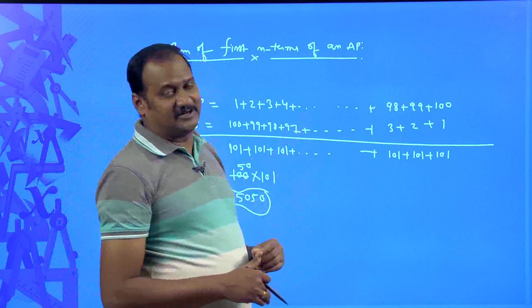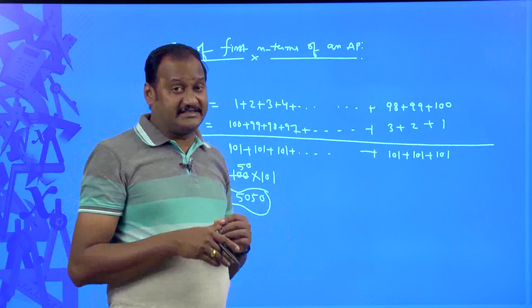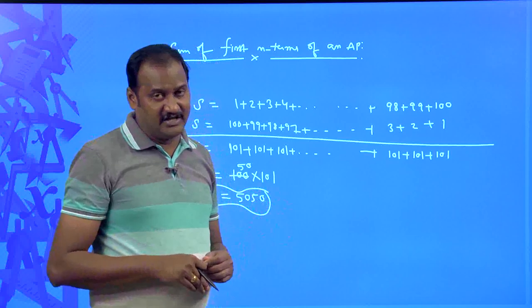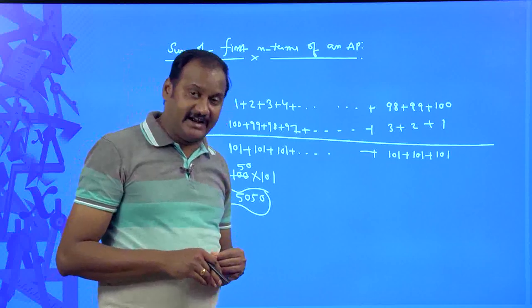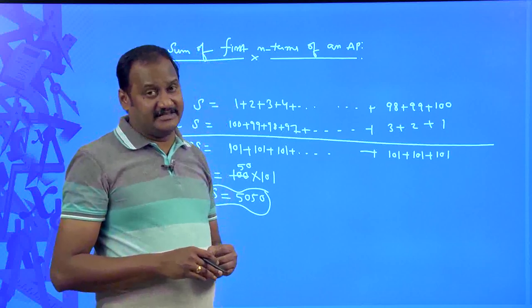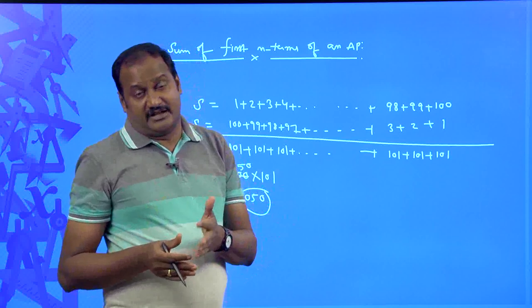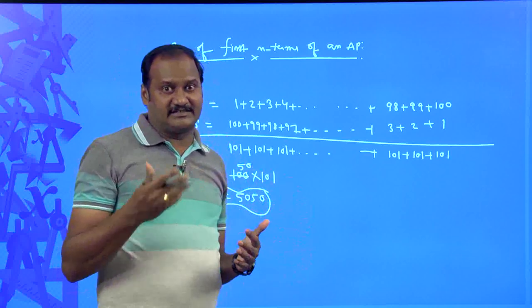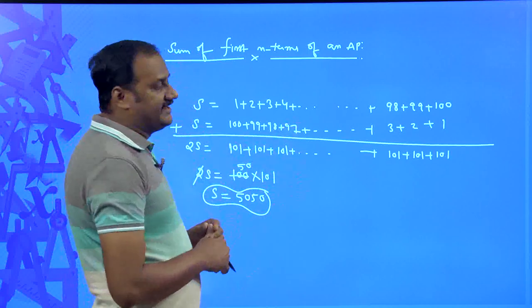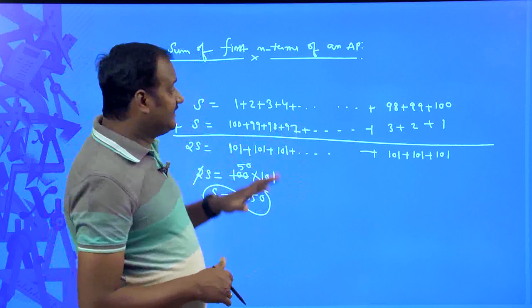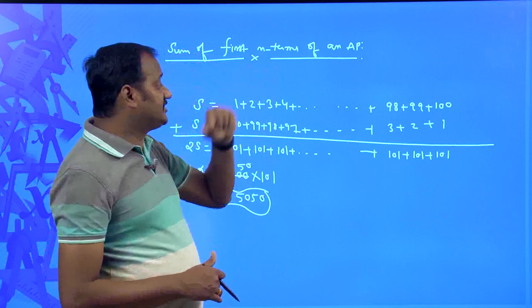Gauss easily answered this problem whereas others were struggling and taking a lot of time. That boy's name was Carl Frederick Gauss. Later he contributed to mathematics in several fields and proposed many interesting theorems — there is a theorem called Gauss's theorem. The same way he followed, we are going to use to find the sum of first n terms of an arithmetic progression.